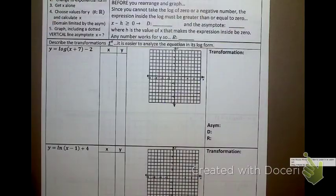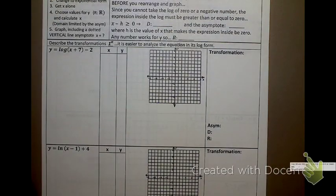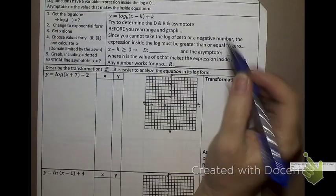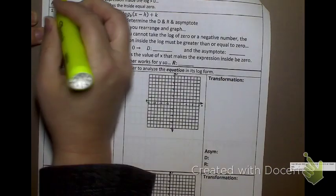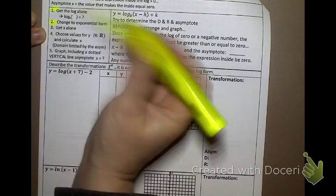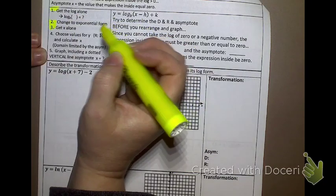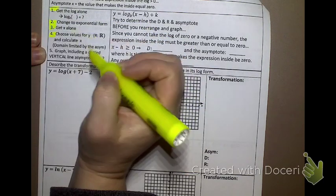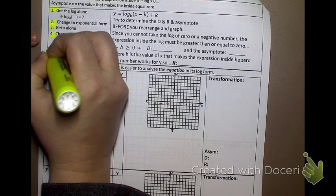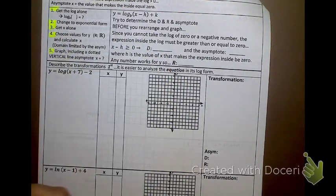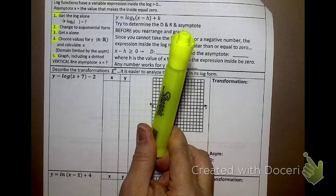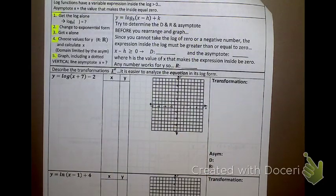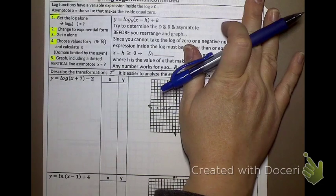So, you need to tell me what you learned about graphing. First off, let's see, we've got some stuff. We've got some steps. Get the log alone. Then change to exponential form. Get x alone. Choose values for y. And graph, including a dotted vertical line asymptote. However, I prefer a highlighter asymptote. So, I have highlighters and such if you need them.